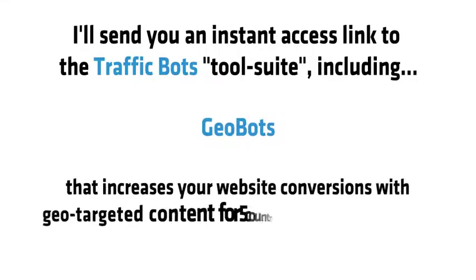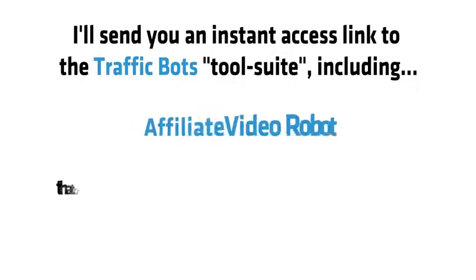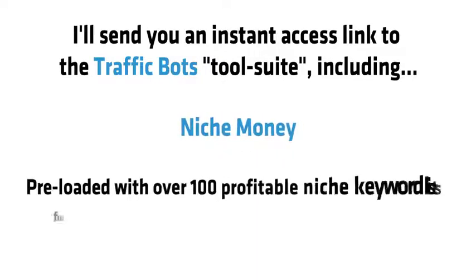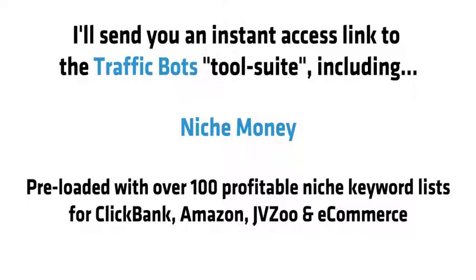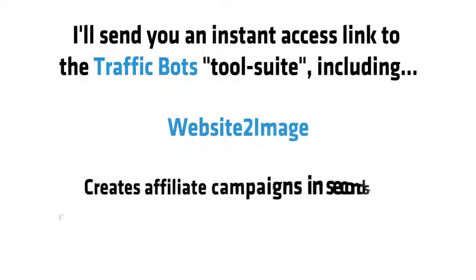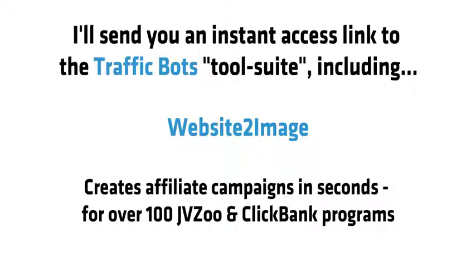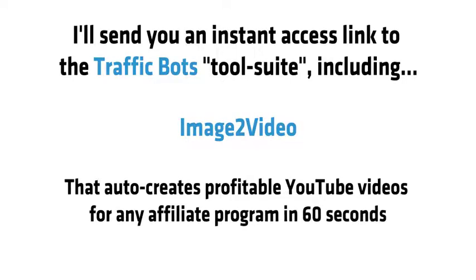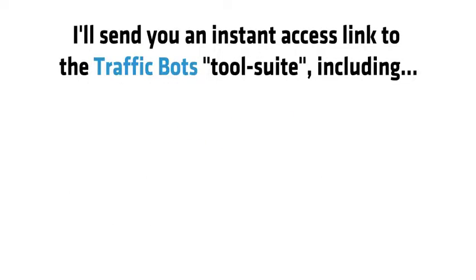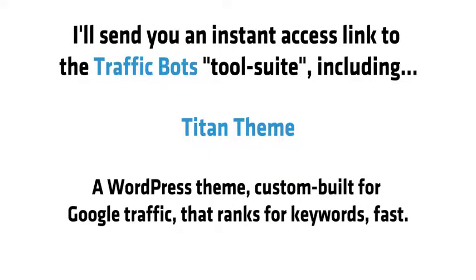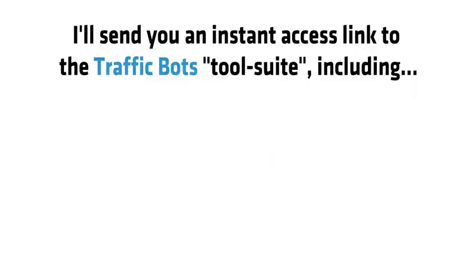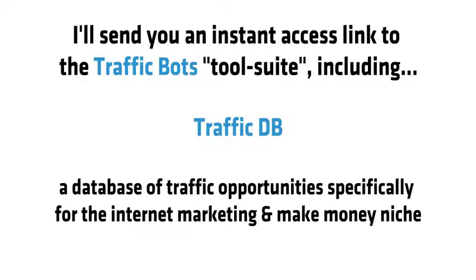The suite includes: GeoBots, that increases your website conversions with geo-targeted content for 5 countries and 10 U.S. states. Affiliate Video Robot, that creates videos for 100 affiliate programs with 1,500 voiceovers and motion graphic slides. Niche Money, preloaded with over 100 profitable niche keyword lists for ClickBank, Amazon, JVZoo, and e-commerce. Keyword Titan, to find easy keyword opportunities with low competition on Google and YouTube. Website2Image, which creates affiliate campaigns in seconds for over 100 JVZoo and ClickBank programs. Image2Video, that auto-creates profitable YouTube videos for any affiliate program in 60 seconds. Domain of Ellie, to discover hidden premium domain names. Titan Theme, a WordPress theme custom-built for Google traffic that ranks for keywords fast. SitesDB, a database of thousands of website and traffic opportunities for the biggest niches. And TrafficDB, a database of traffic opportunities specifically for the internet marketing and make-money niche.